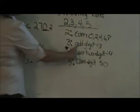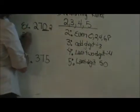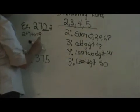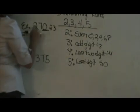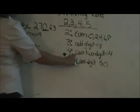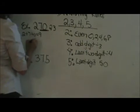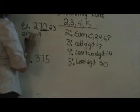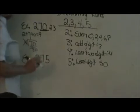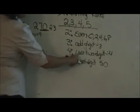Now let's check for 3. Let's add our digits: 2 plus 7 plus 0. You just add those three digits together and that adds to 9. 9 is divisible by 3, therefore 270 is also divisible by 3. Now let's look at 4. Let's look at the last two digits. Is 70 divisible by 4? When you go to divide it, 4 goes into 7 one time with a remainder of 3, and 4 into 30 does not go evenly, so 270 is not divisible by 4.